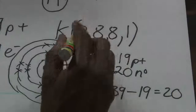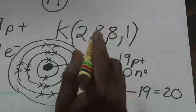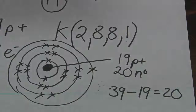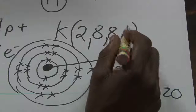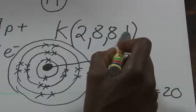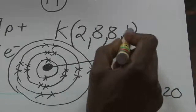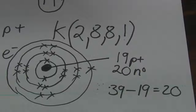Very important: the electronic configuration will guide you as to which shells the atom has, how many shells, from which group the atom is, and which shell contains how many electrons. Let's move on to the next one.